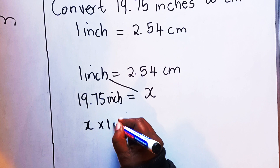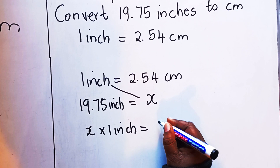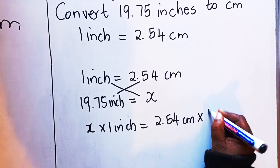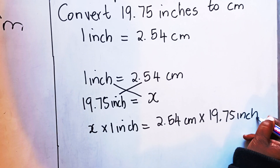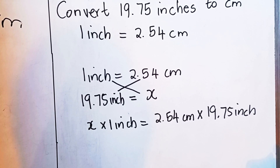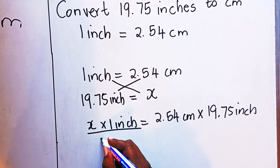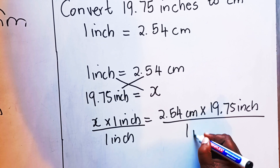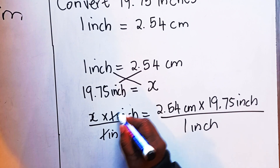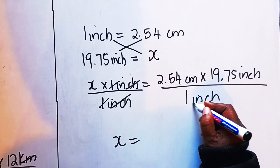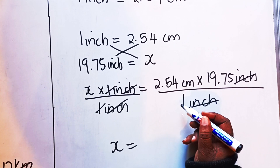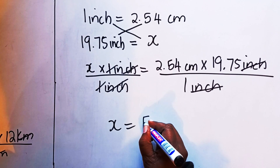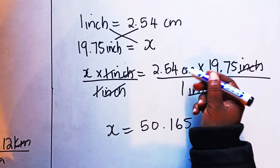Cross multiply: x times one inch equals 2.54 centimeters times 19.75 inches. To leave x alone, divide both sides by one inch. The inch cancels the inch, the ones cancel. Take your calculator: 2.54 multiplied by 19.75. Your answer is 50.165.